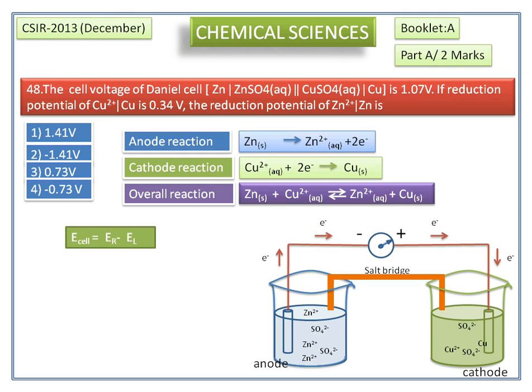The reduction potential for Cu²⁺/Cu is 0.34 volts, so E_R = 0.34 volts.